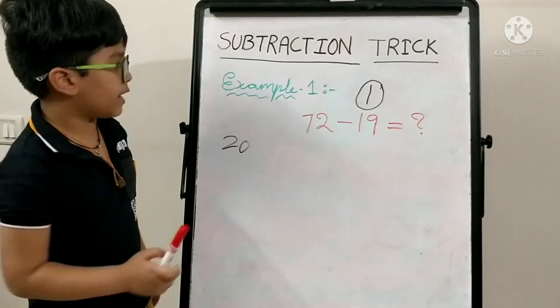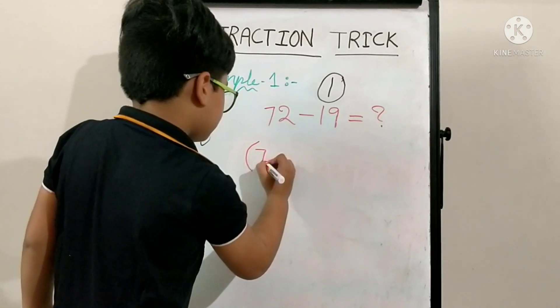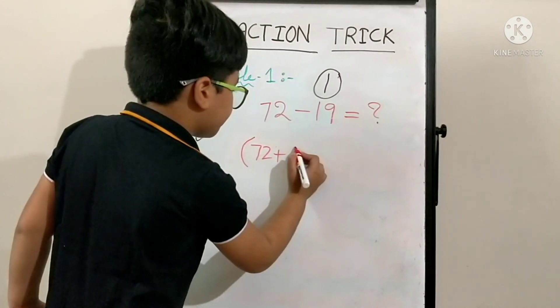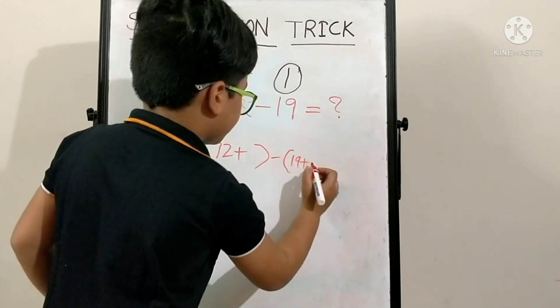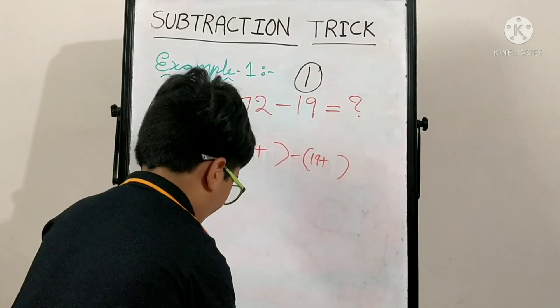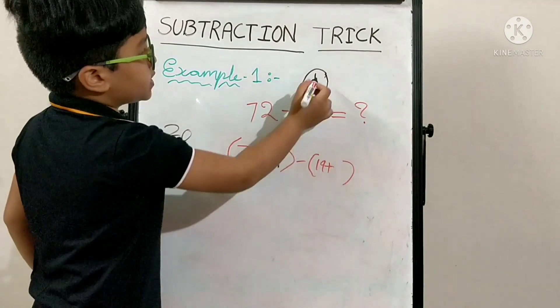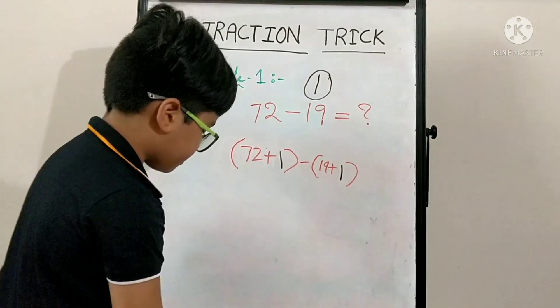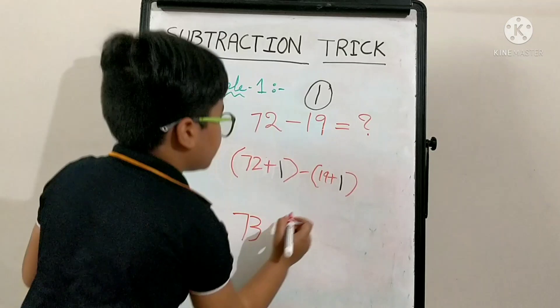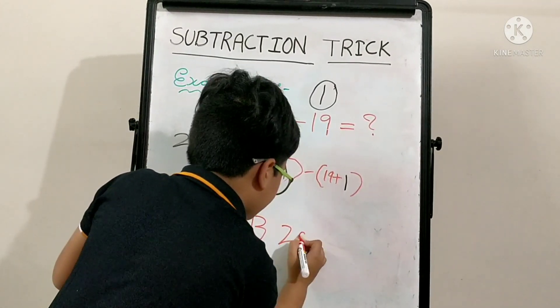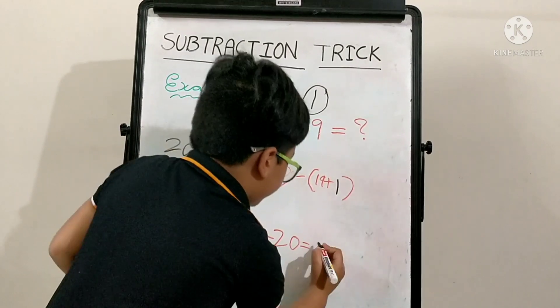The second step is, you have to add this one to both of these numbers. 72 plus 1, minus 19 plus 1. 72 plus 1 is 73. 73 minus 20 is equal to 53.